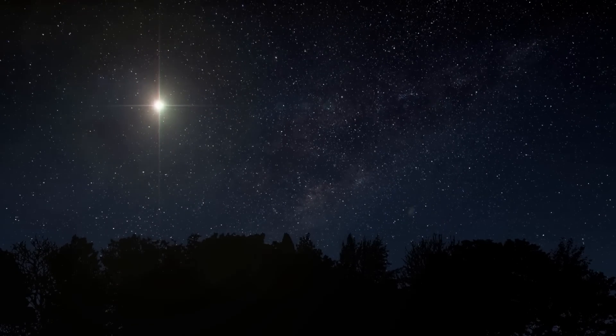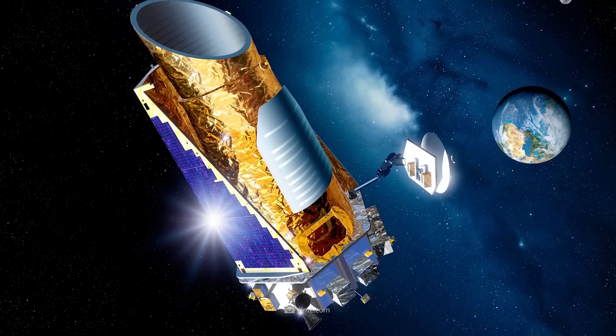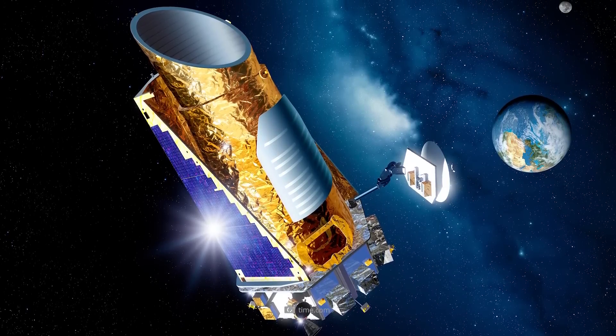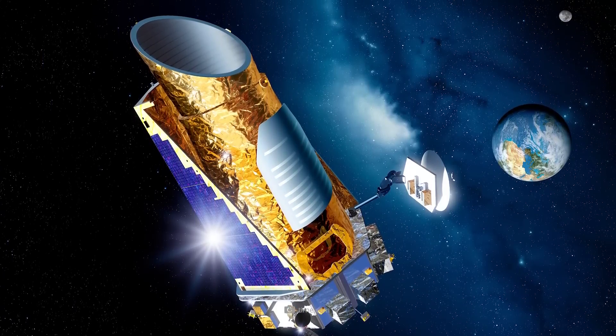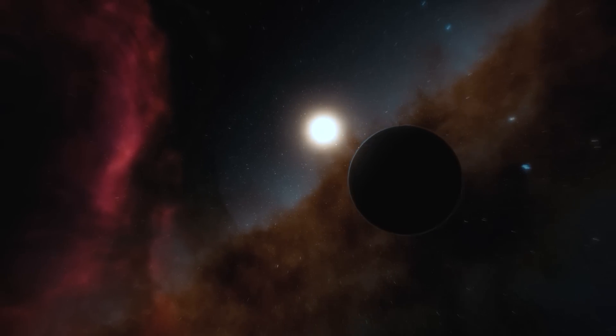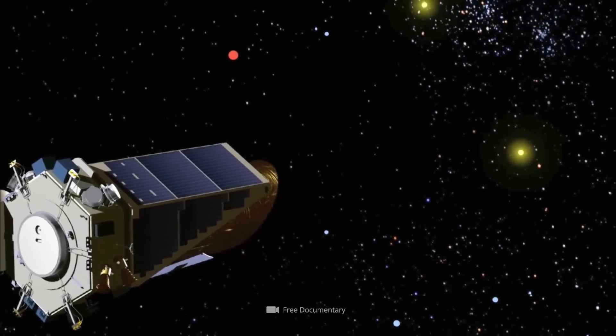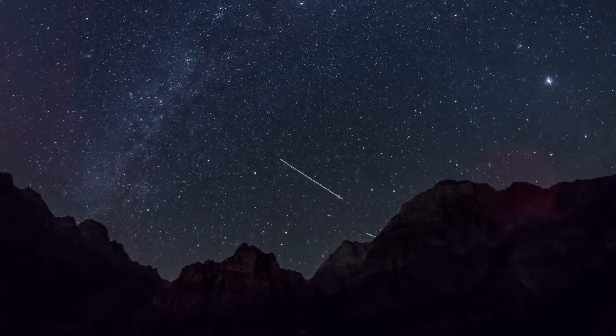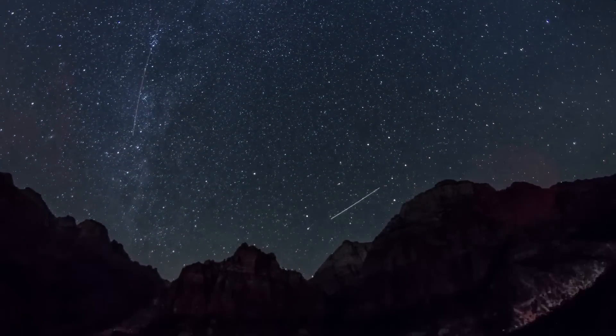Shortly after its discovery, seemingly random dimmings in HD 139139's luminosity were noticed. This was observed by the Kepler Space Telescope, which measured light emissions from stars to detect passing exoplanets. The telescope observed a full 28 dips in brightness over an 87-day period in 2017.